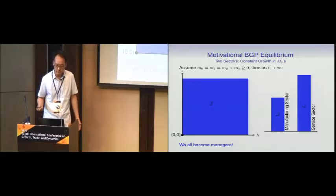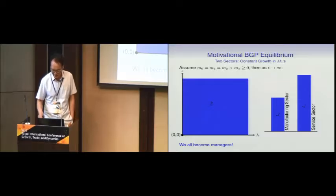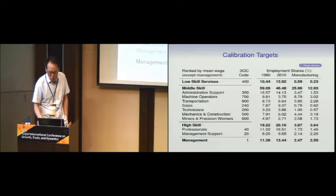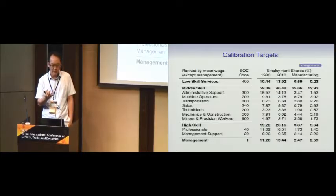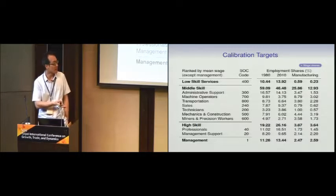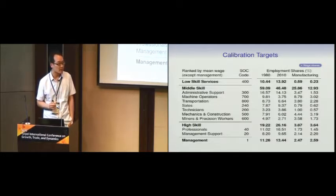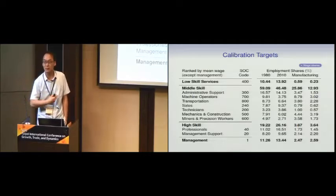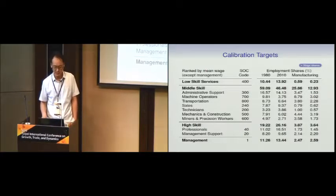One joke from the calibrated part: manager-specific TFP is the lowest-growing one, so in the limit, everybody will be managers — we'll all be independent contractors. For the quantitative analysis, we have enough parameters and moments for the 1980 US economy at this aggregation level. From then on, the only thing that changes are constant growth rates in occupation-level TFPs. On top of that, we have sector-specific technological change that affects all occupations in the same way.